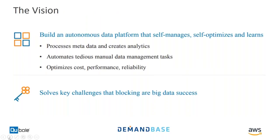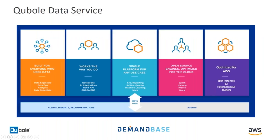Wouldn't it be great if someone could just make it all easier? That is the Kubel vision. Our vision is to basically automate the big data platform — orchestrate and automate it. Kubel is a big data as a service provider, and in doing so, we help our customers improve their total cost of ownership while accelerating time to value. Kubel is a single platform for everything related to big data.